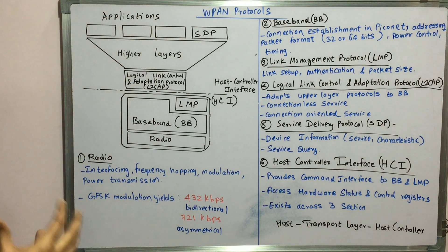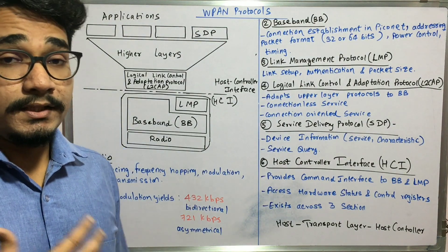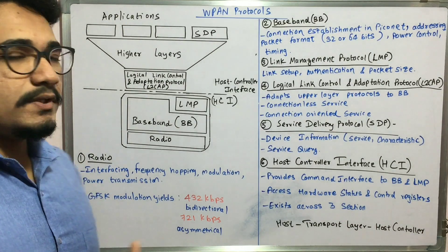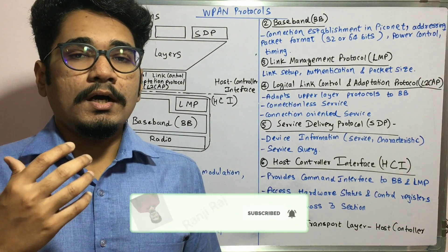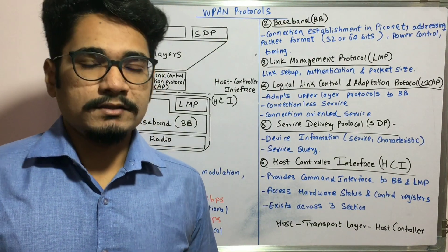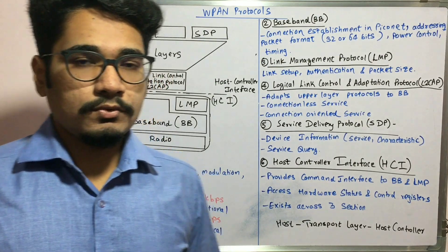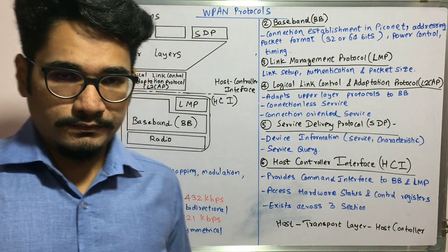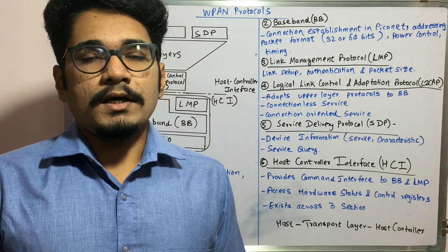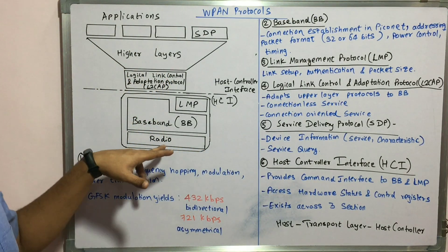The very first layer is the radio. Radio is basically done for interfacing between different layers participating in the WPAN and different protocols in order to make them functional. Then you have frequency hopping, which is mainly done for efficient bandwidth usage during data transmission. If you want a larger bandwidth, you can go for frequency hopping. You can also do modulation, which is done with the help of Gaussian Frequency Shift Keying (GFSK). And then you have power management — ad hoc power management and everything is handled at the radio layer.